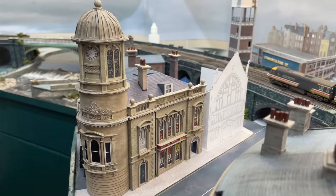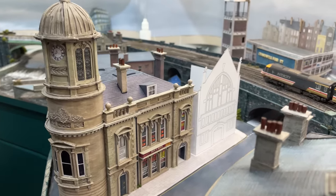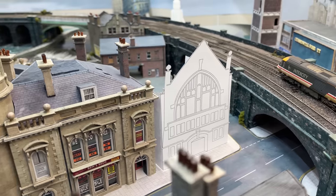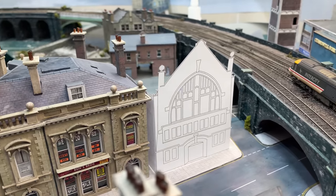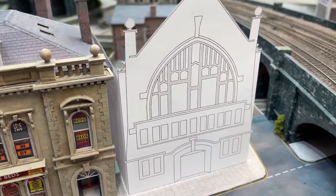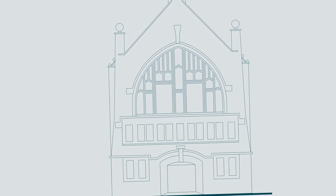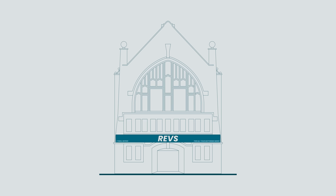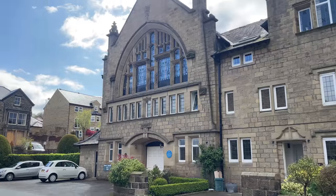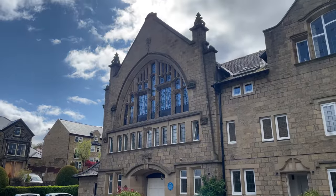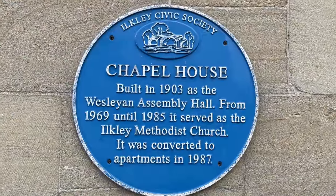Next to the old town hall, which was opened in 1857, we have the former Wesleyan Assembly Hall, completed in 1903. The hall served as Chandwell's Methodist Church between 1969 and 1985, after which it became REVS, a car parts supplier. The building is based on Chapel House in Ilkley, right down to its imagined history, taken from its blue plaque.